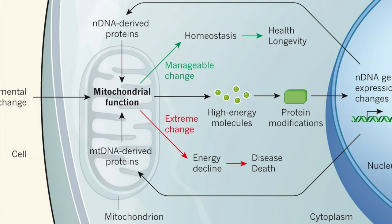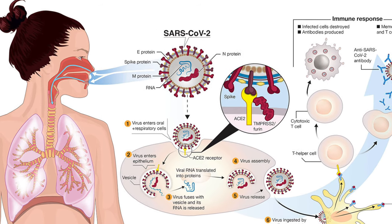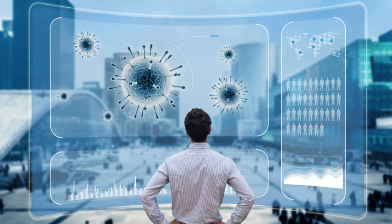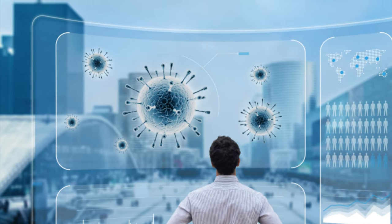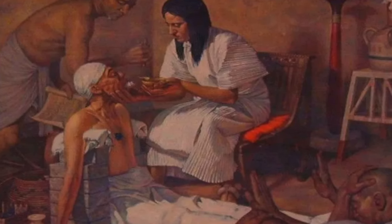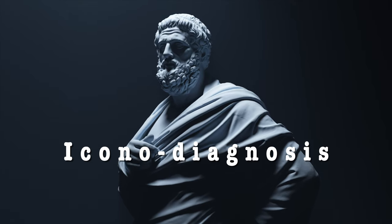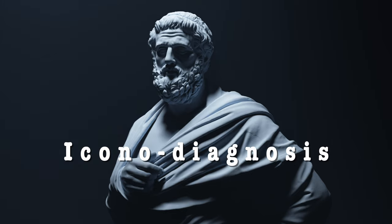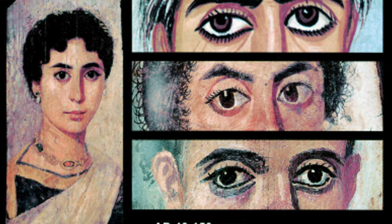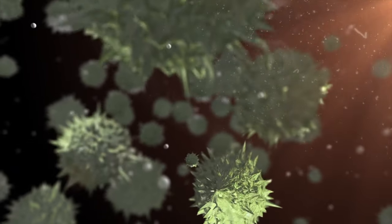Diseases change with time, and so it is important to know — specifically with the COVID infections that have come upon us and that will disappear, and another virus will come — whether and what sort of diseases were present in the long distant past. One way of trying to find that out is to use what we call icono-diagnosis, that is the diagnosis of diseases as depicted in ancient paintings and sculptures, so that we can say that, say, 2,000 years ago, the disease was present or not present.